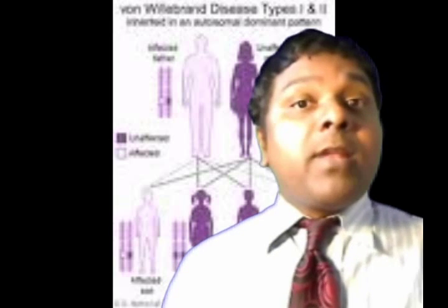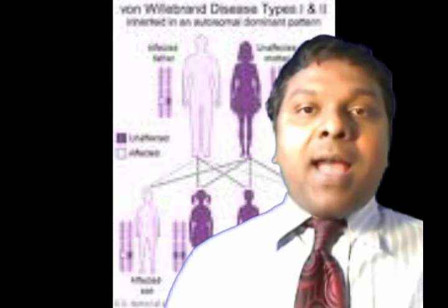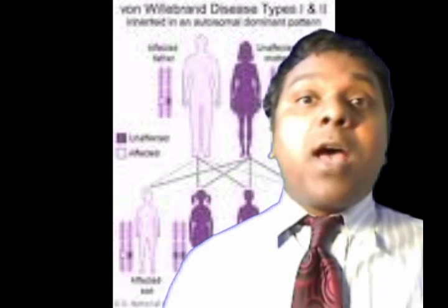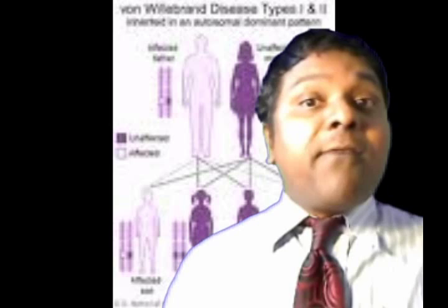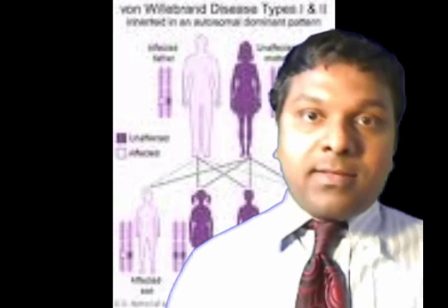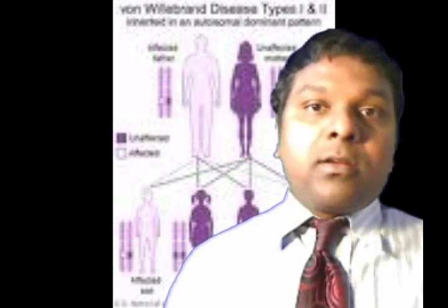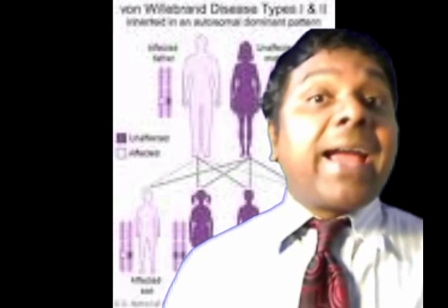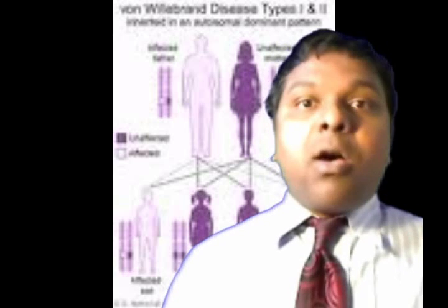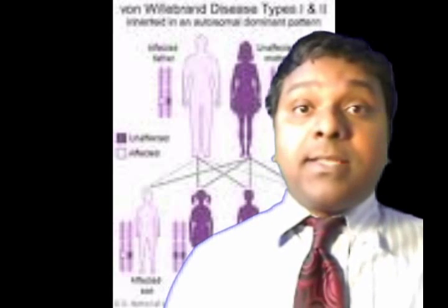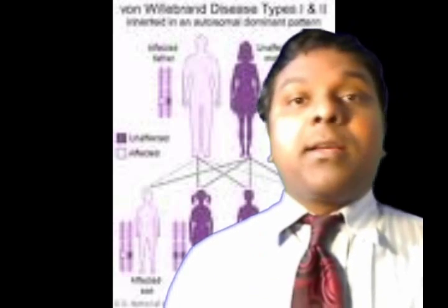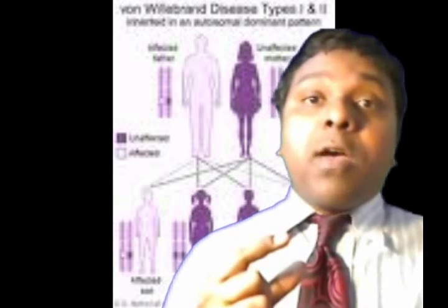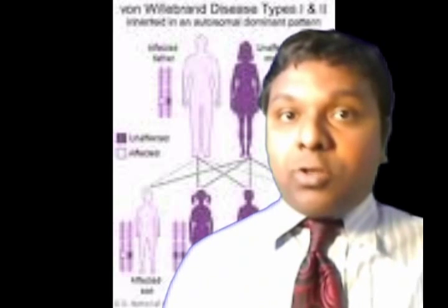What is von Willebrand factor? Its uniqueness is that it is synthesized, stored, and secreted by the vascular endothelial cells. It is a cofactor for platelet adhesion and also a carrier protein for factor 8. Von Willebrand factor is a very large multimeric glycoprotein — it binds to receptors and bridges platelets together.